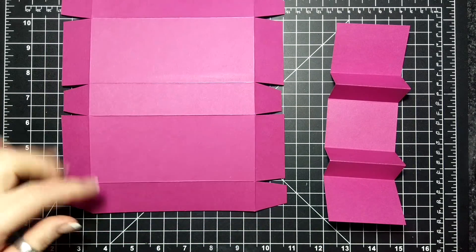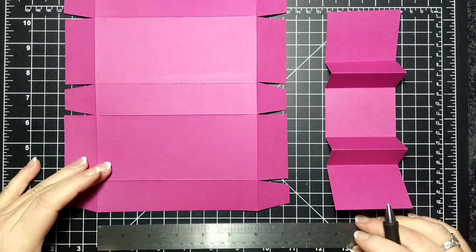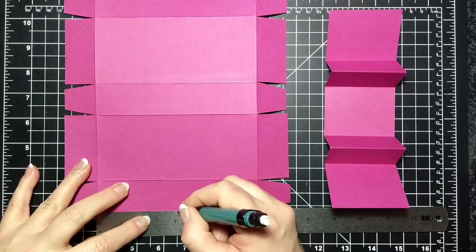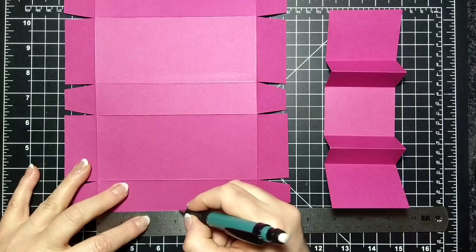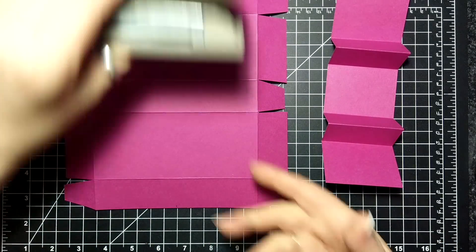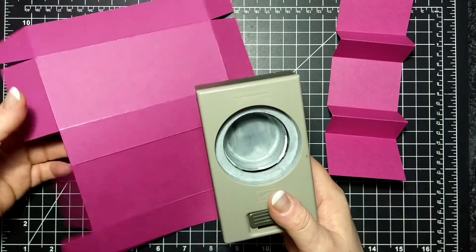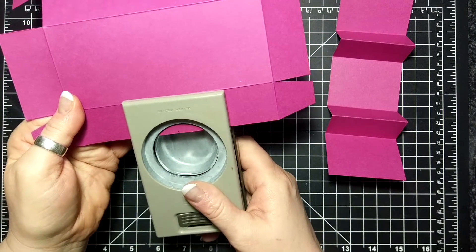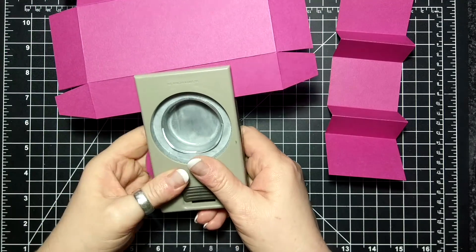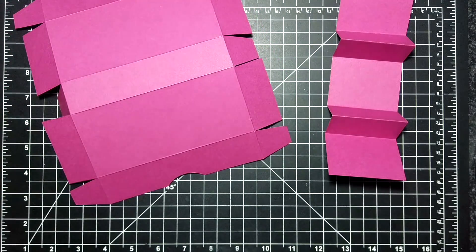So I'm just gonna choose this side as my front, and I know that my front is six inches, so I'm just gonna make a little mark with my favorite pencil at three inches. I'm gonna come in with my two inch circle punch and I'm going to cut that little guy.